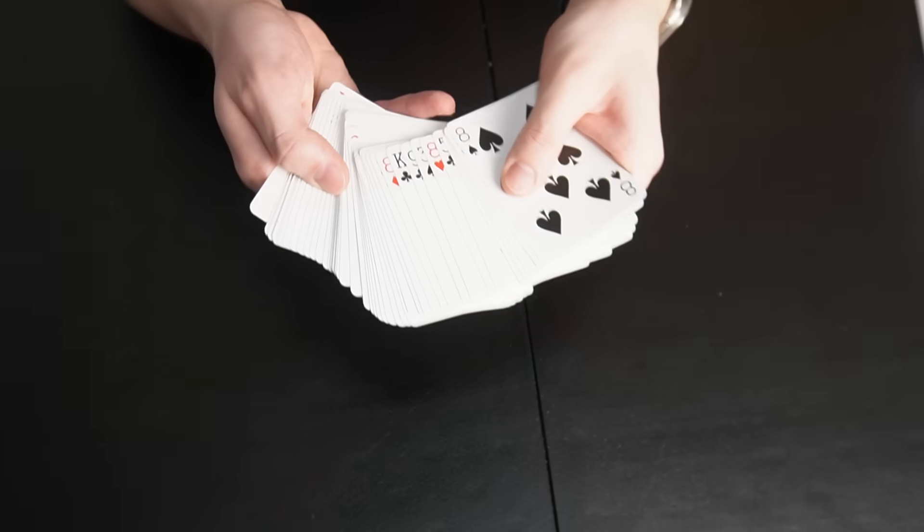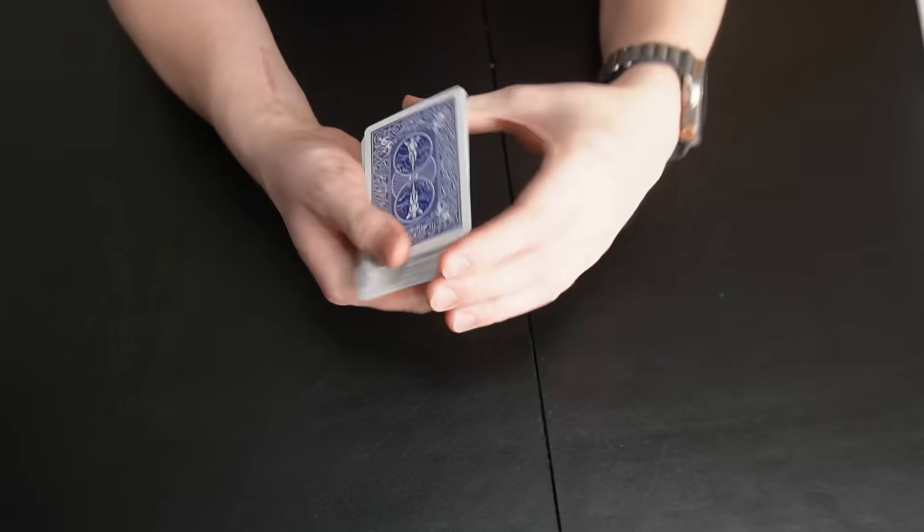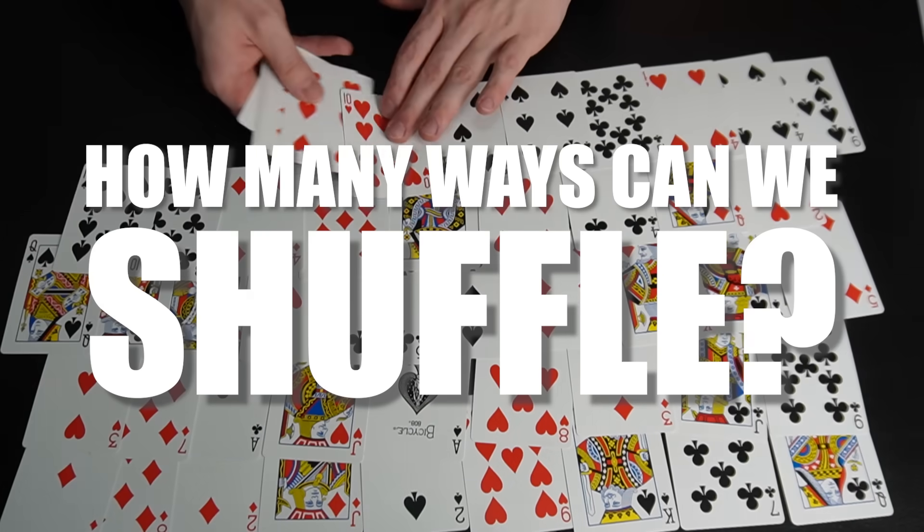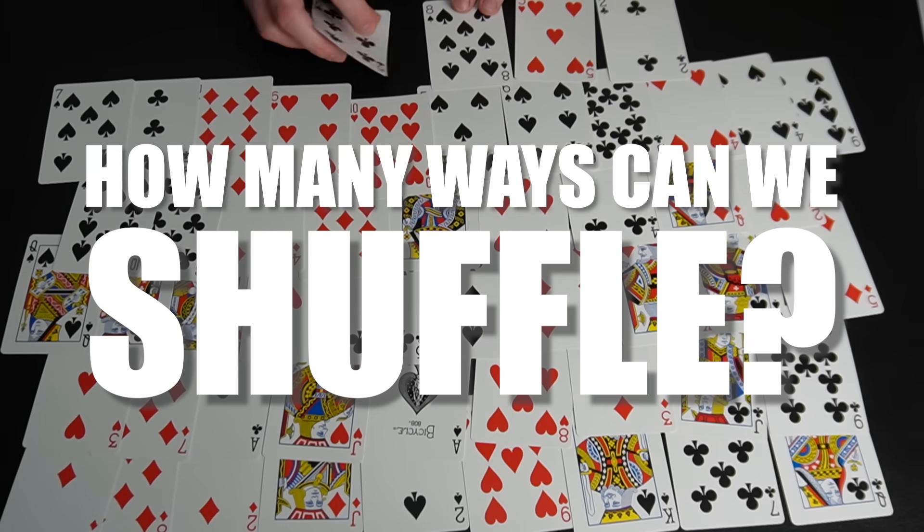To give a better idea of these jumps, I'm going to use an example by Scott Chepiel. Take a standard deck of 52 cards, shuffle it, then lay them down. How many different ways could we shuffle this deck of cards?